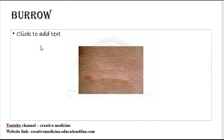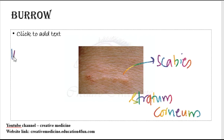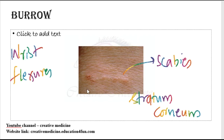Burrows. Thin wavy tracts laid down by mites into the stratum corneum are called burrows. Burrows are seen in scabies. The most common sites of burrows are wrists, flexors, fingers, and umbilicus. The mites lay eggs at the end of the tract of the burrow.